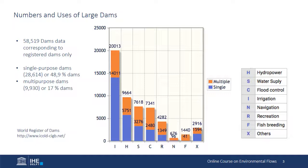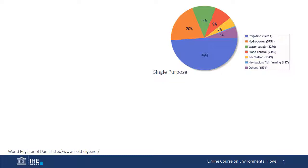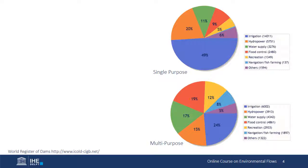A smaller proportion of dams with known uses are multi-purpose, but the numbers are still substantial. We must also not forget that there are millions of smaller dams around the world. Irrigation is the most common purpose of single-purpose large dams, followed by hydropower, water supply, and flood control. Irrigation is also the most common purpose in multi-purpose dams, more closely followed by flood control, water supply, and then hydropower. Large numbers of dams for irrigation and hydropower are single-purpose, while more flood control and water supply dams are multi-purpose.